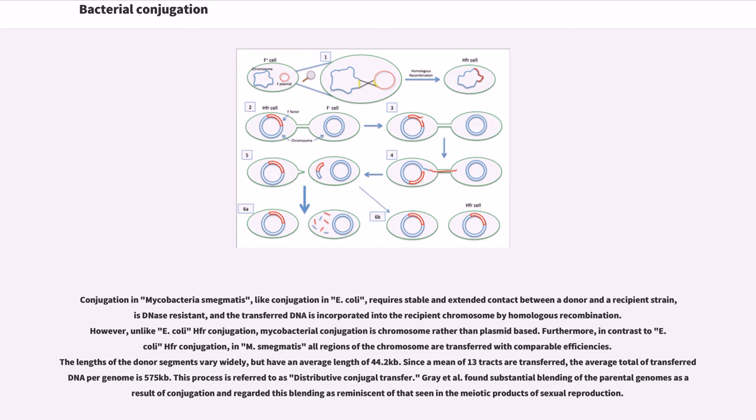However, unlike E. coli Hfr conjugation, mycobacterial conjugation is chromosome rather than plasmid-based. Furthermore, in contrast to E. coli Hfr conjugation, in M. smegmatis all regions of the chromosome are transferred with comparable efficiencies. The lengths of the donor segments vary widely, but have an average length of 44.2 kb. Since a mean of 13 tracts are transferred, the average total of transferred DNA per genome is 575 kb.